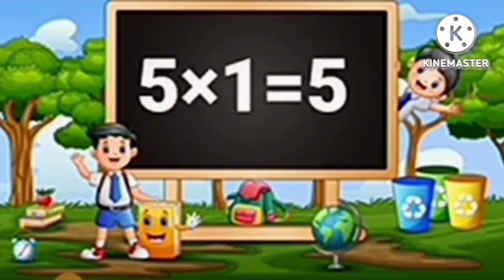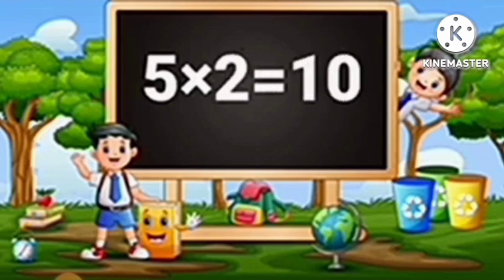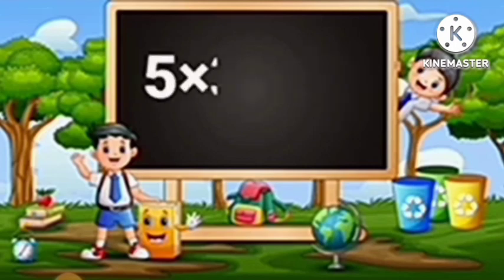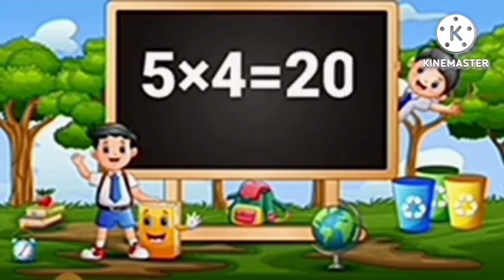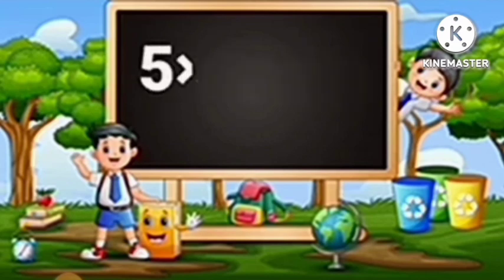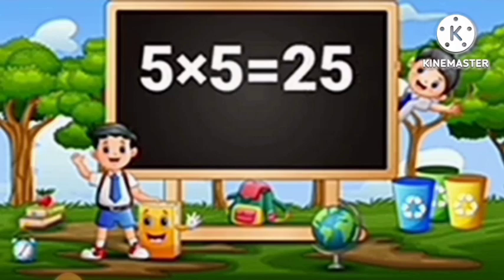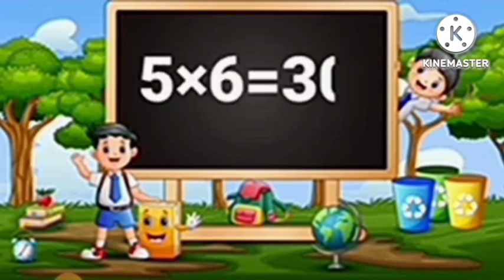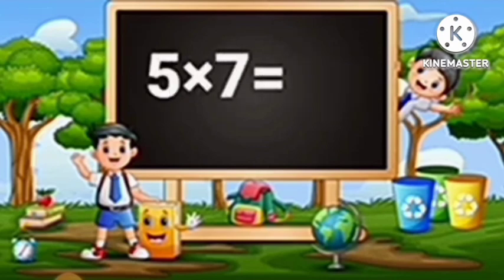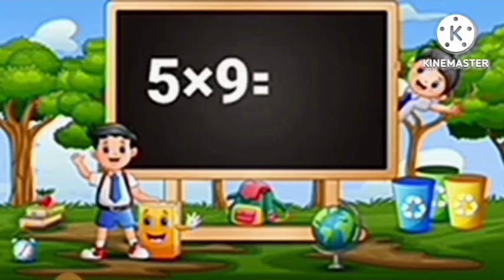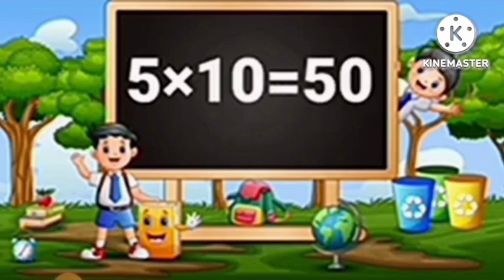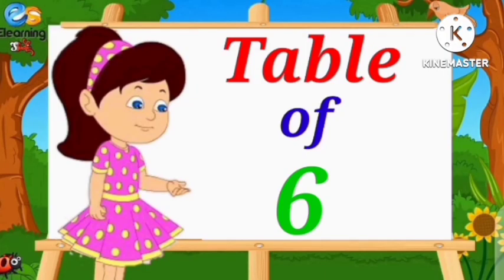Table of Five. Five ones are five. Five twos are ten. Five threes are fifteen. Five fours are twenty. Five fives are twenty-five. Five sixes are thirty. Five sevens are thirty-five. Five eights are forty. Five nines are forty-five. Five tens are fifty.